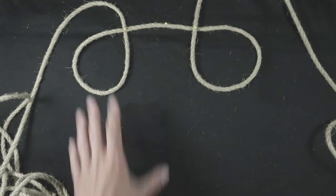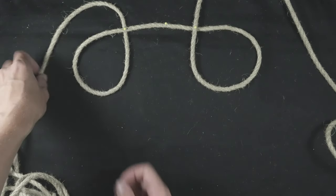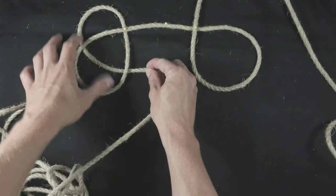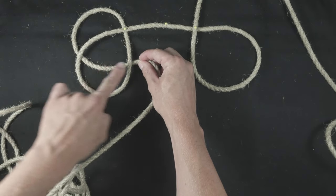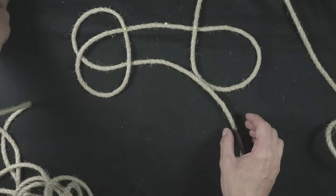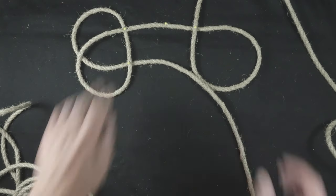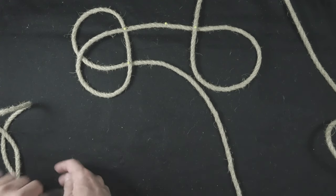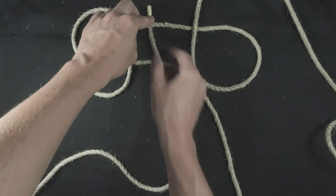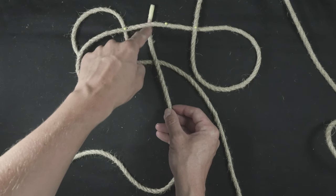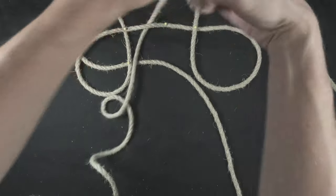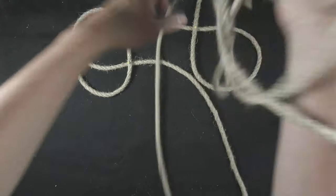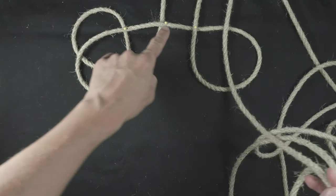Let's continue on the left. Take your working end and pass it under the loop, so under two. Continue by feeding the left end under the standing part.